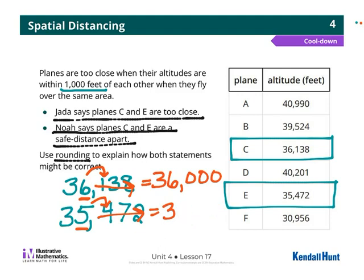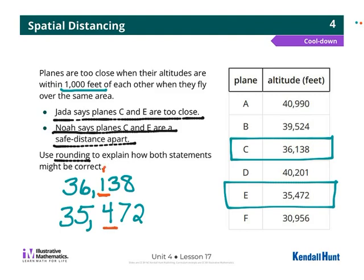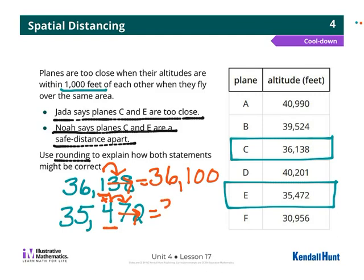So what happens if I round to a different place value? What if we round to the hundreds? I look to the right — it's a three, so those will be zeros. That gives us 36,100. For 35,472, look to the right — it's a seven, so I add one to that four and the rest become zeros: 35,500. Now they're only about 400 feet apart. So for Jada, she could have rounded to the hundreds place.